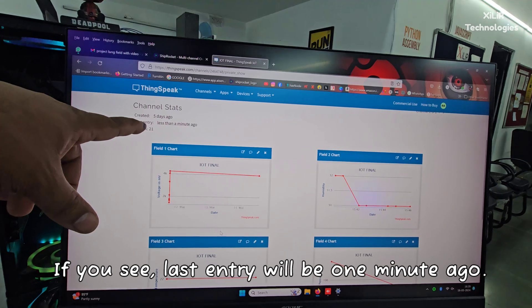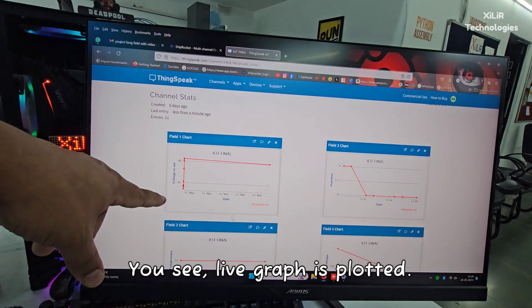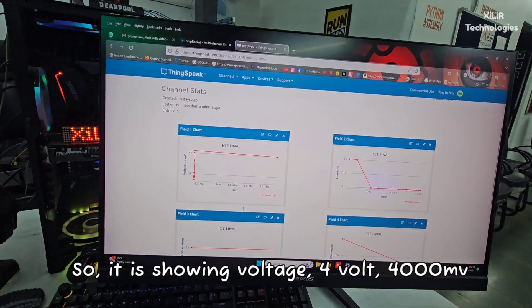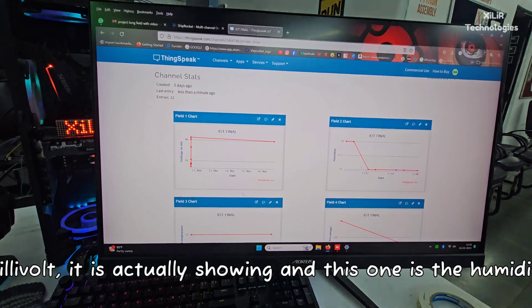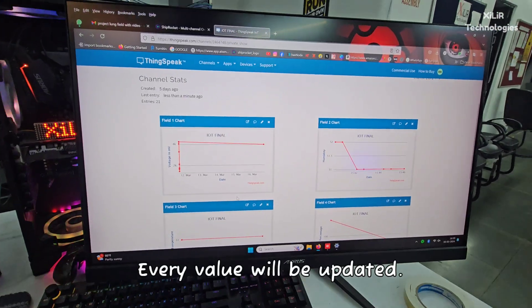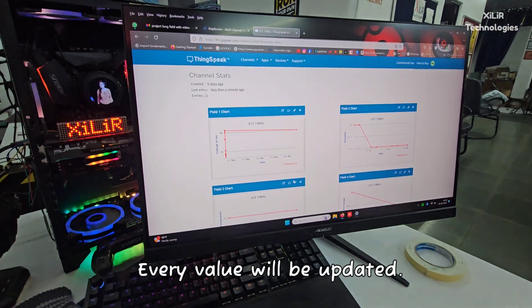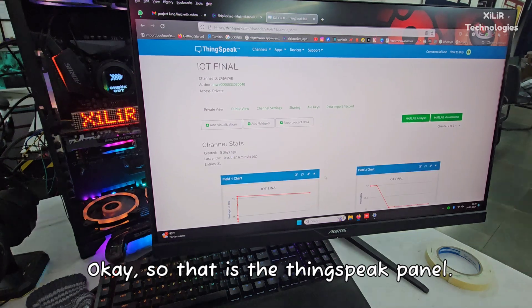Now these readings will be plotted here. You can see the last entry will be one minute ago. This live graph is plotted, showing voltage 4 volt, which is actually 4000 millivolt. This one shows the humidity and every value will be updated.